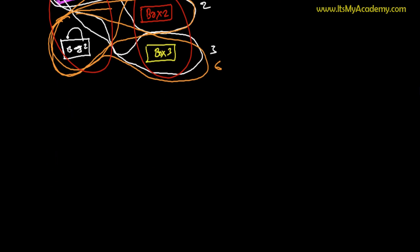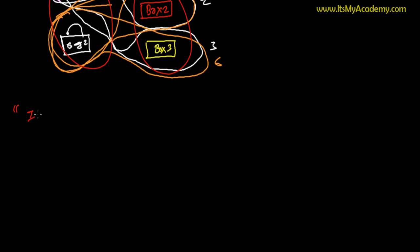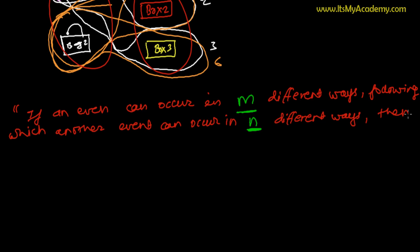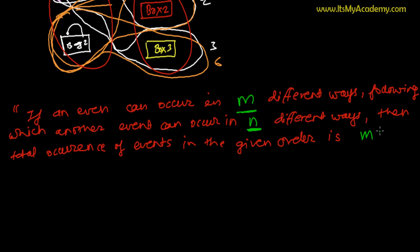Now let me state it in a better way. If an event can occur in m different ways, following which another event can occur in n different ways, then the total occurrence of both events in the given order is m times n.